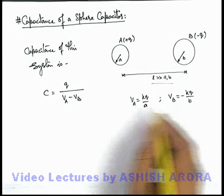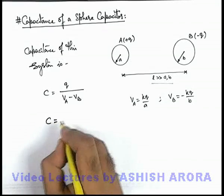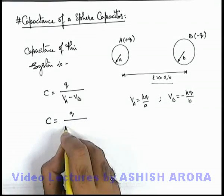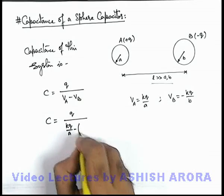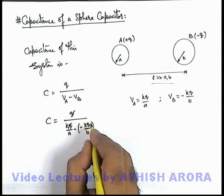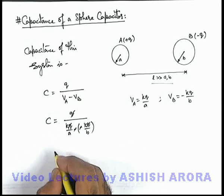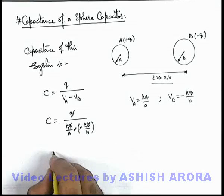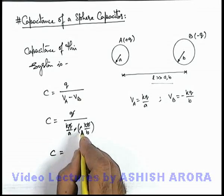If we substitute the two potentials, the capacitance will be q divided by kq/a minus (-kq/b). In this situation, q gets cancelled out, the minus will also cancel, and the capacitance we are getting is in the form ab/(a+b).